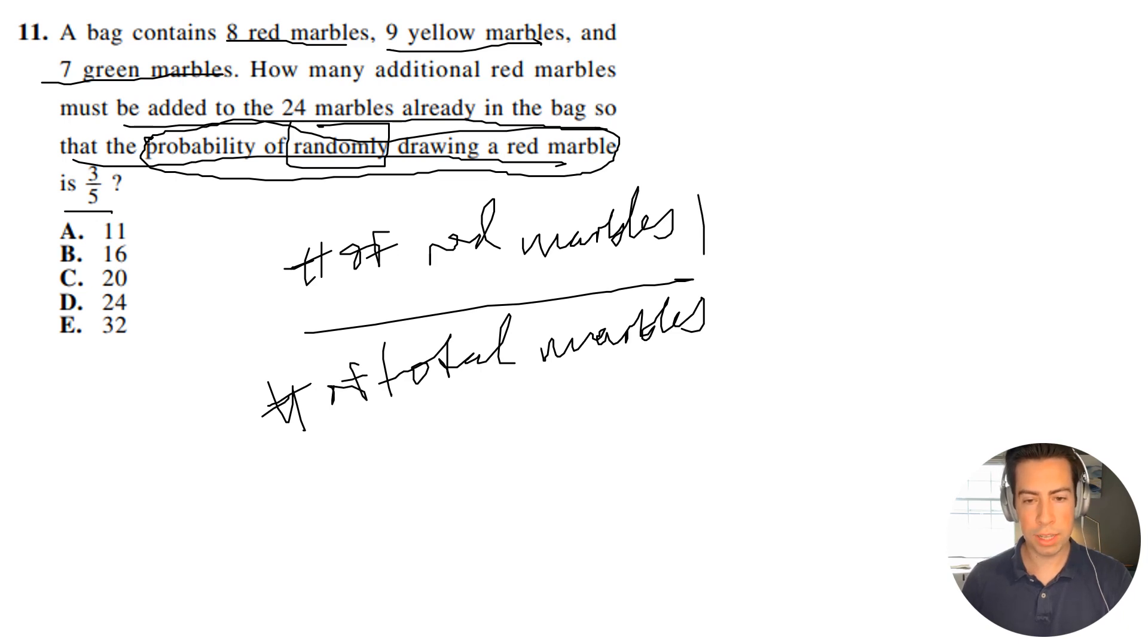So what that's going to look like is if we bring it up here, basically we're going to need some amount of red marbles. So let's see here, how many do we have? We have eight red marbles already. We're going to need to add some amount of red marbles, and that same amount of red marbles we're going to have to add to the total. So I'm going to have to add X to both top and bottom, and this has to be equal to three-fifths.